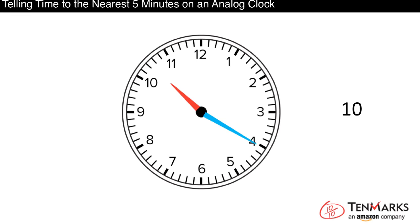The long minute hand points to the 4. To find the minutes, start at the 12 and skip count by fives until you reach the 4. 5, 10, 15, 20. So the minutes are 20. This clock shows 10:20.